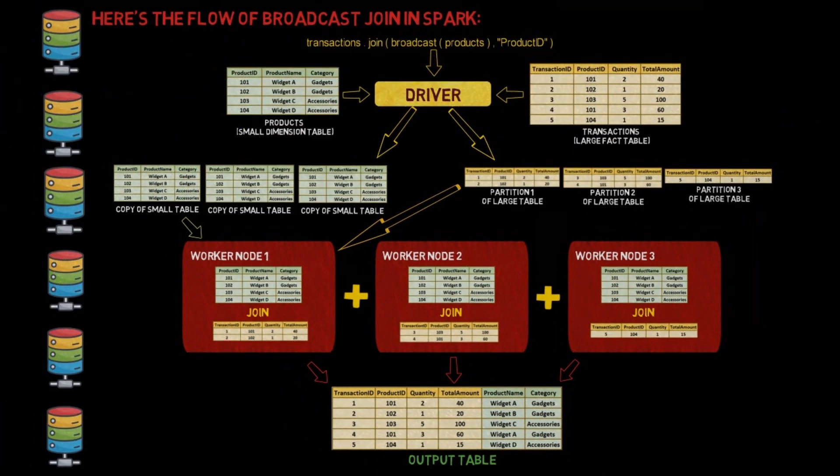Broadcast Join is an optimization technique used in Spark SQL engine to improve performance by reducing data shuffling between a large and smaller data frame during traditional joins. By reducing data shuffling, Broadcast Join improves performance and prevents out-of-memory errors, ultimately saving costs for users.